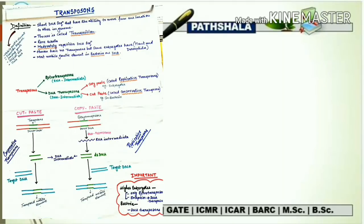There are two types of transposons: retrotransposons and DNA transposons. Retrotransposons use an RNA intermediate in the overall process. For DNA transposons, there are two mechanisms: copy-paste and cut-paste.